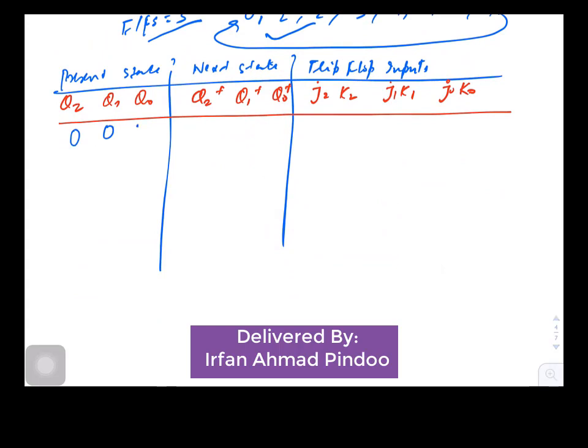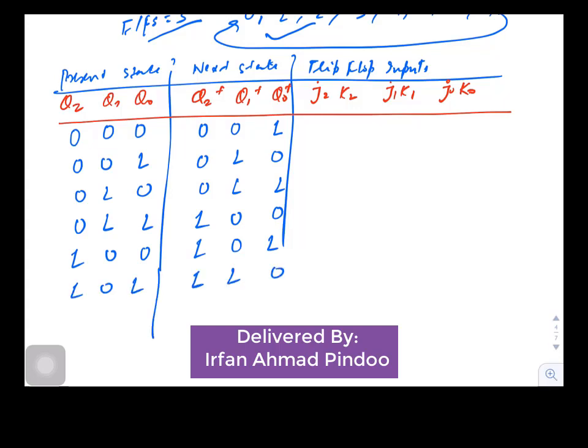If we see the sequence, it is moving as an up counter from 0 to 7. So let us repeat it here: from 0 we are moving to 1, and after 1 we will go to 2, from 2 we are going to 3, from 3 we move to 4, from 4 we move to 5, from 5 we move to 6.